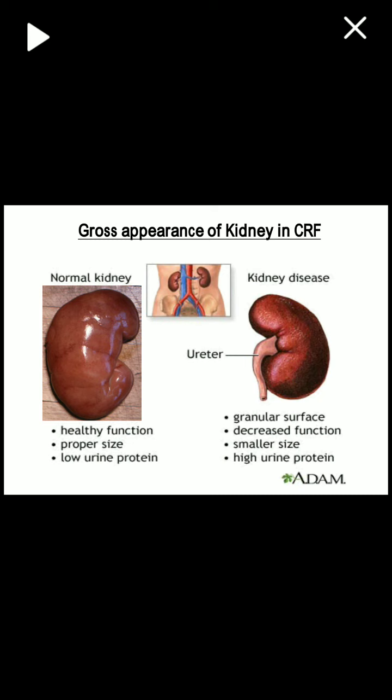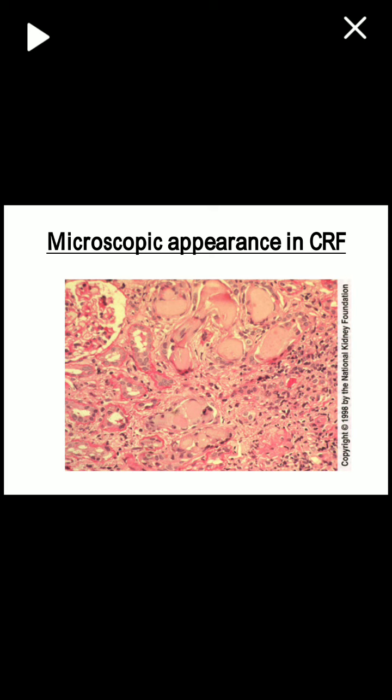A diagrammatic comparison of normal and CKD kidneys shows the normal kidney has proper size and low urinary protein, whereas the CKD kidney has reduced size, a granular surface, decreased function, and high urinary protein. Microscopy of chronic kidney disease shows one intact glomerulus visible, while several glomeruli in the center are sclerosed and non-functional, reducing the kidney's reabsorption capacity. The patient consequently has oliguria or anuria and reduced urine formation, leading to uremia.